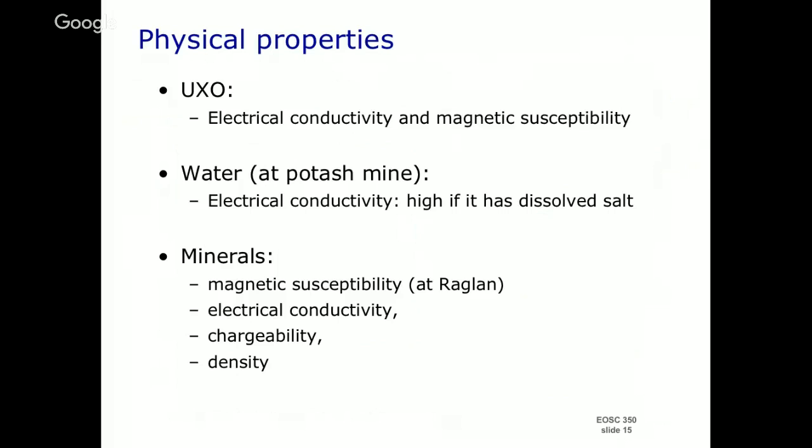When we've got a UXO problem, the very first thing we think about is: what are the diagnostic physical properties? In this case we come up with those two — electrical conductivity and magnetic susceptibility. That's the first important step, because it's going to guide us through where we might go from there.